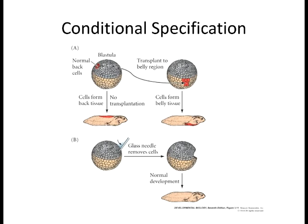There comes a point where cells become determined. When determined, if you move them to another place, they no longer respond to various signals—they're already established in their fate. Conditional specification creates these patterns within the embryo, but only to a certain point. Then cells will, for the most part, become specified autonomously because they're already determined in their fate.